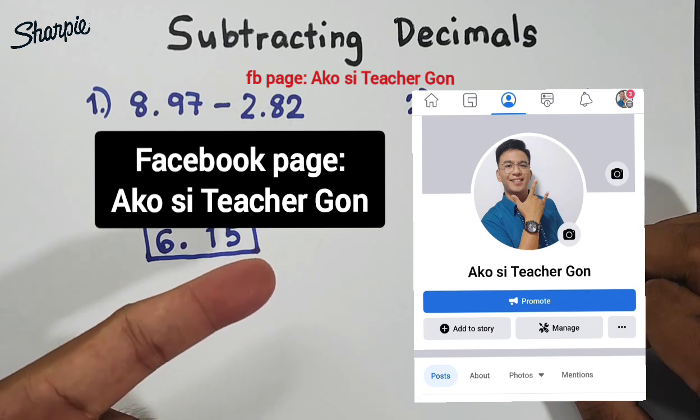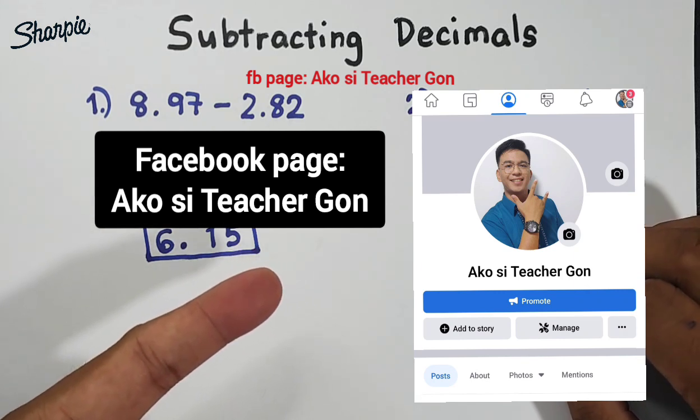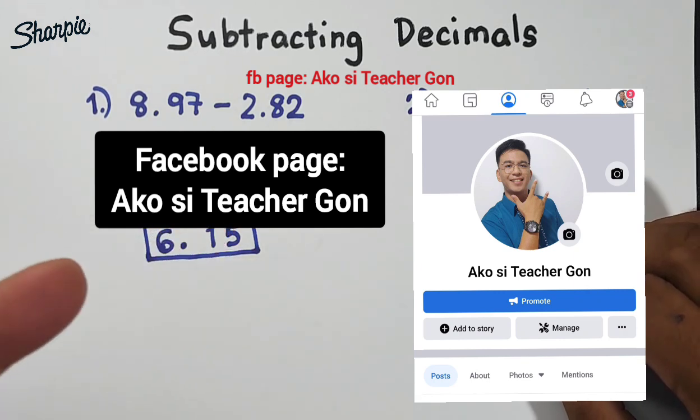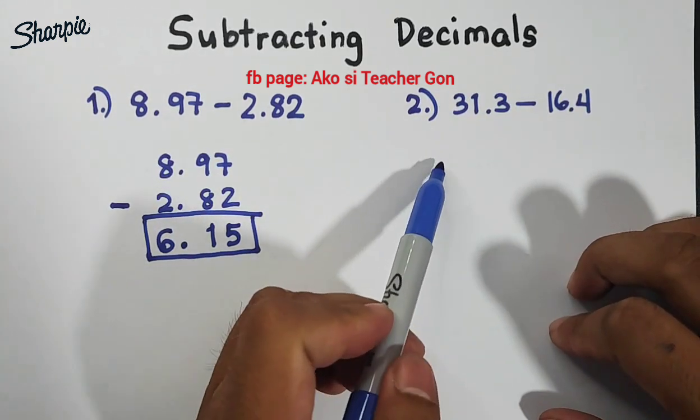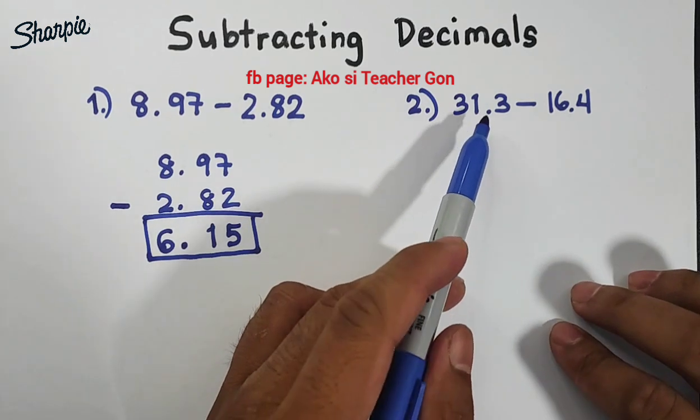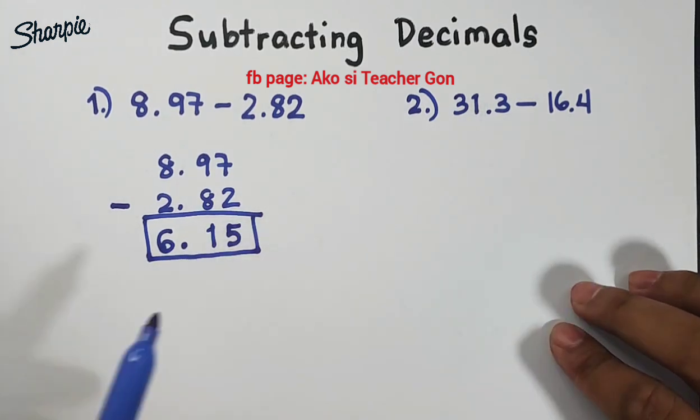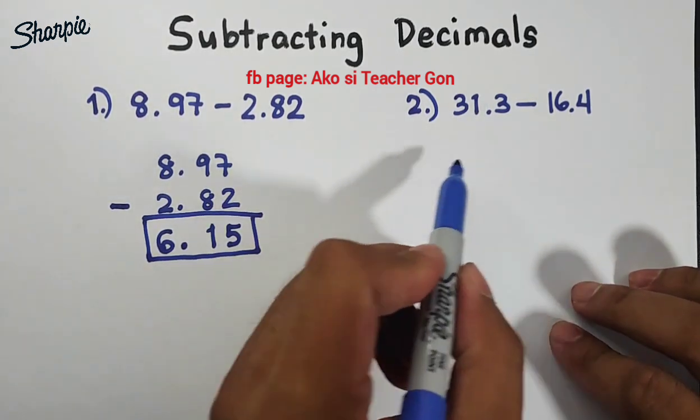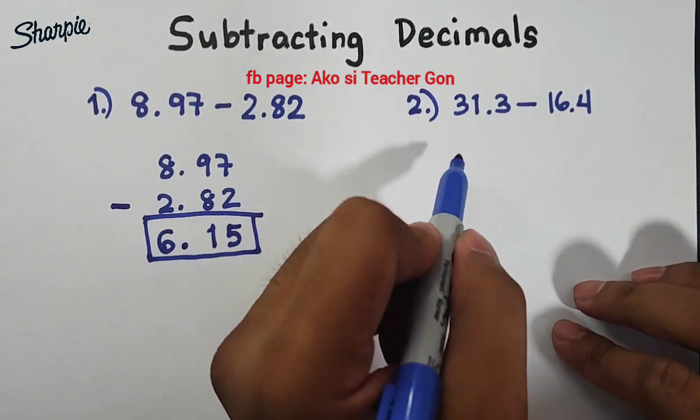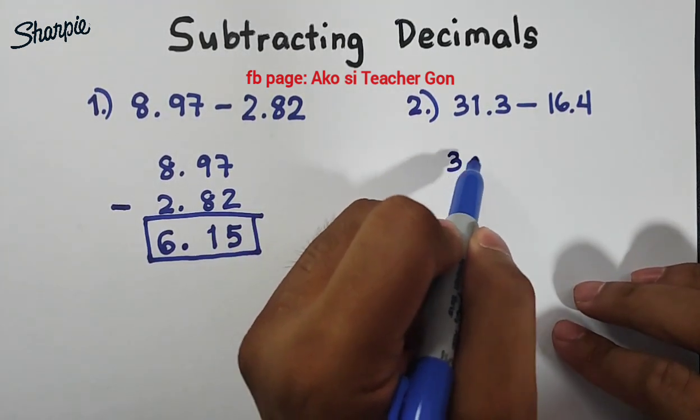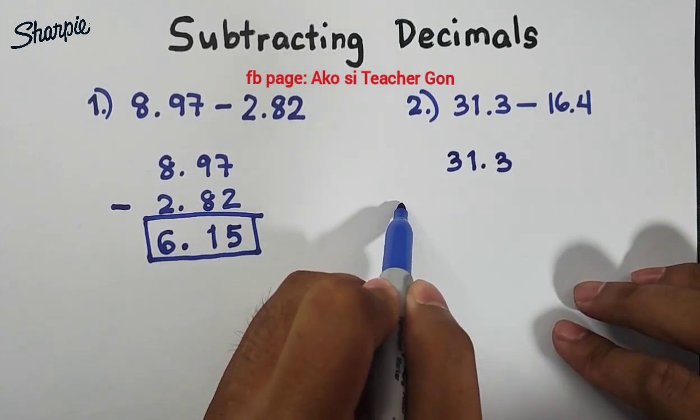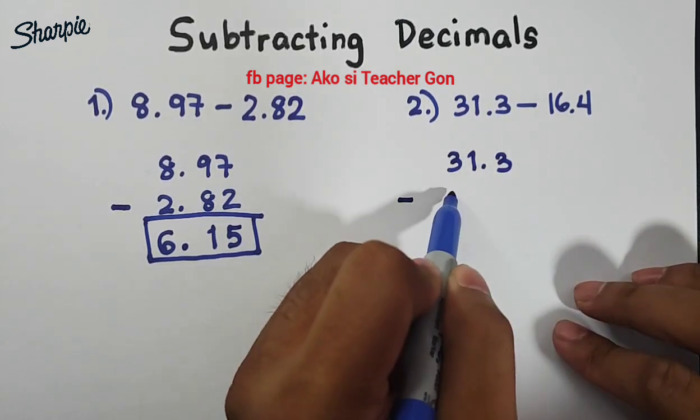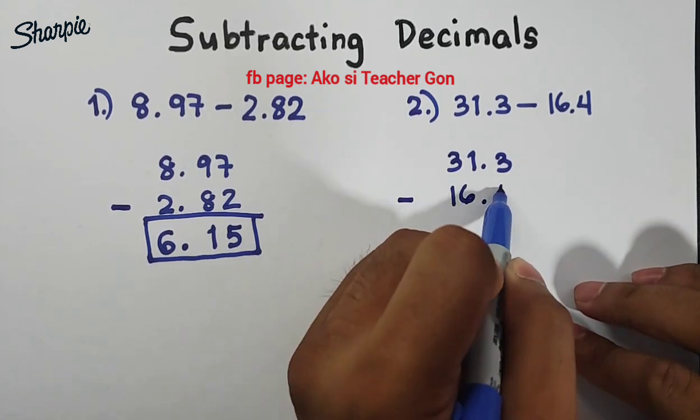Next number two we have this decimal 31.3 minus 16.4. So we will write these decimals vertically, we have 31.3 minus 16.4.